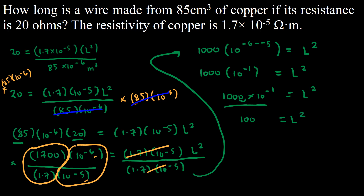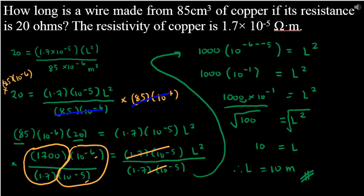Since we have L squared, we extract the square root of both sides. Therefore, L equals 10 meters. And we have just solved our problem. That concludes this tutorial — always remember, physics is easy with Mr. Jesse.